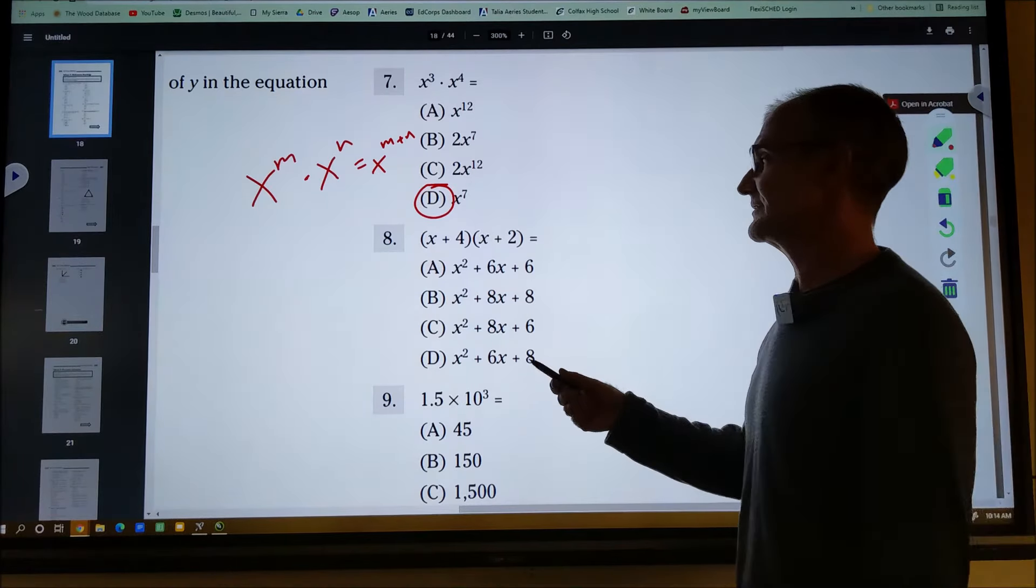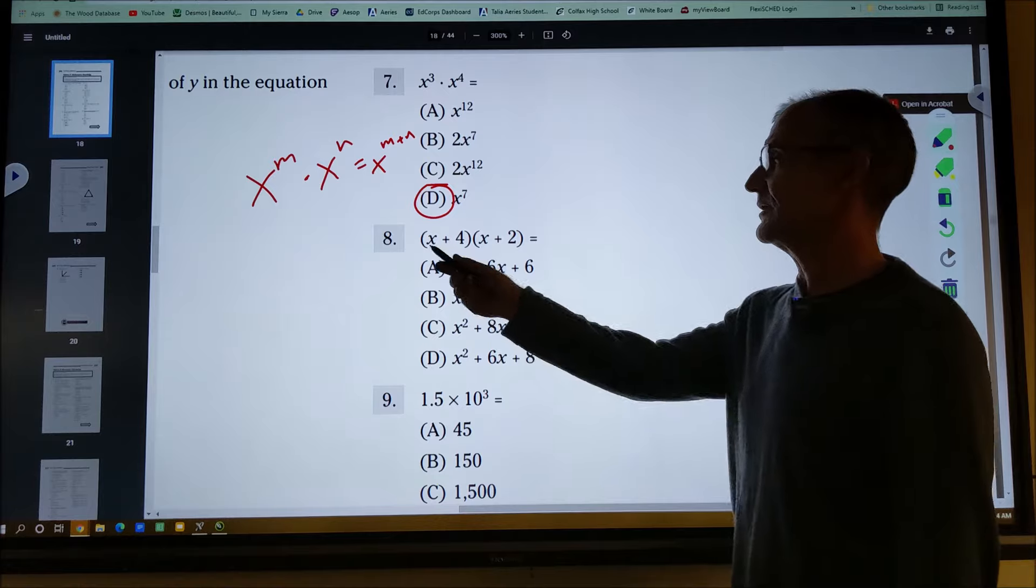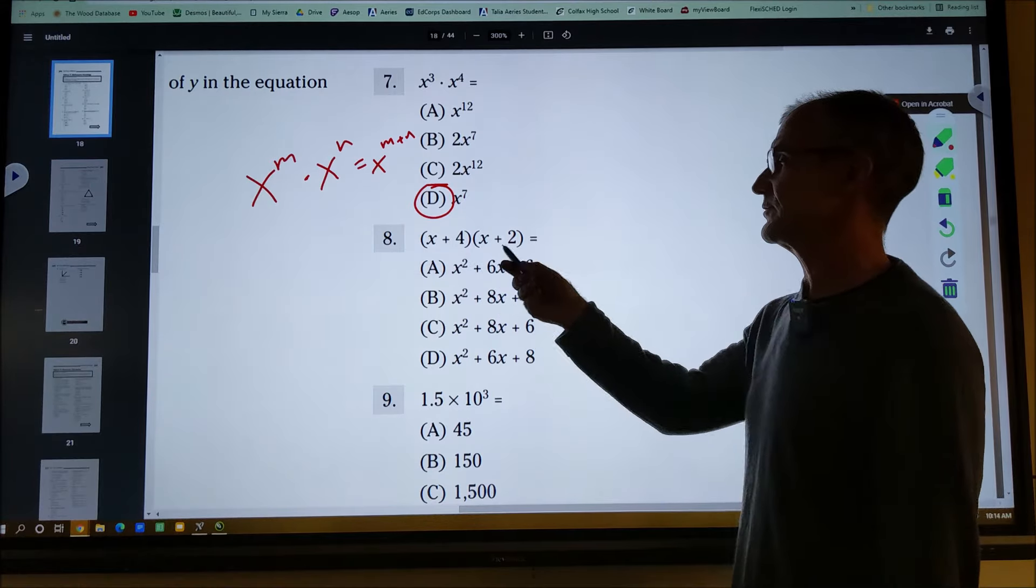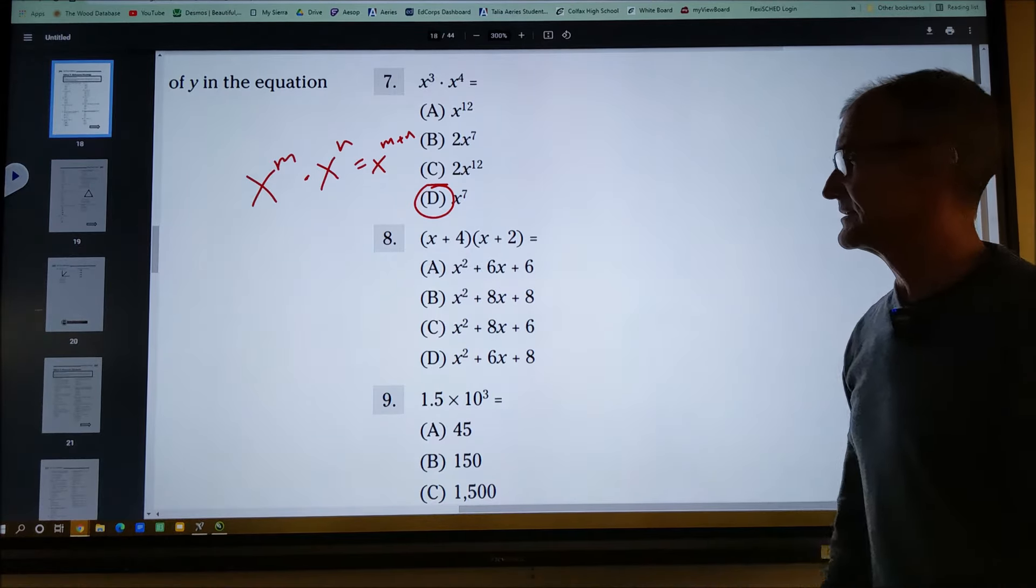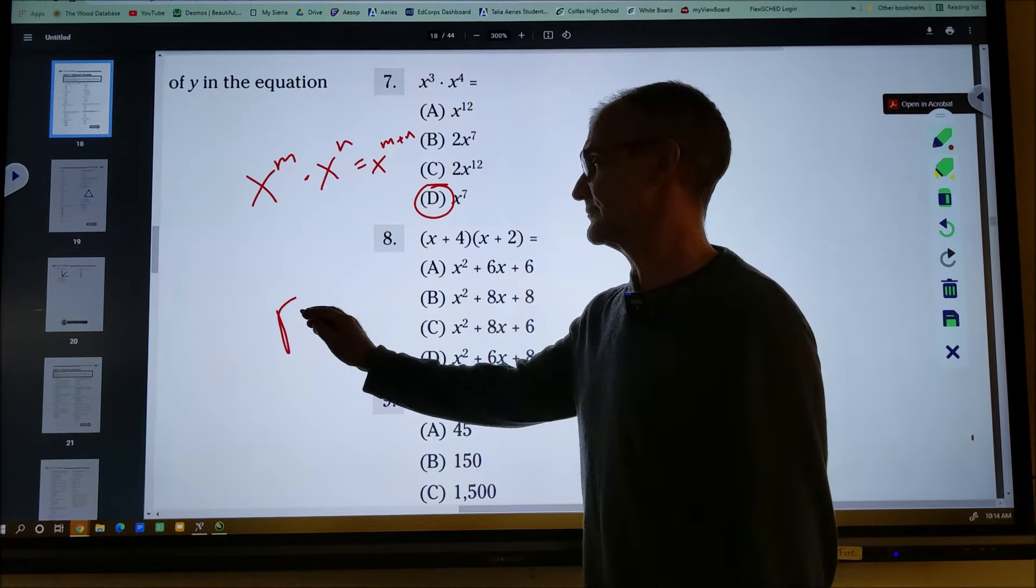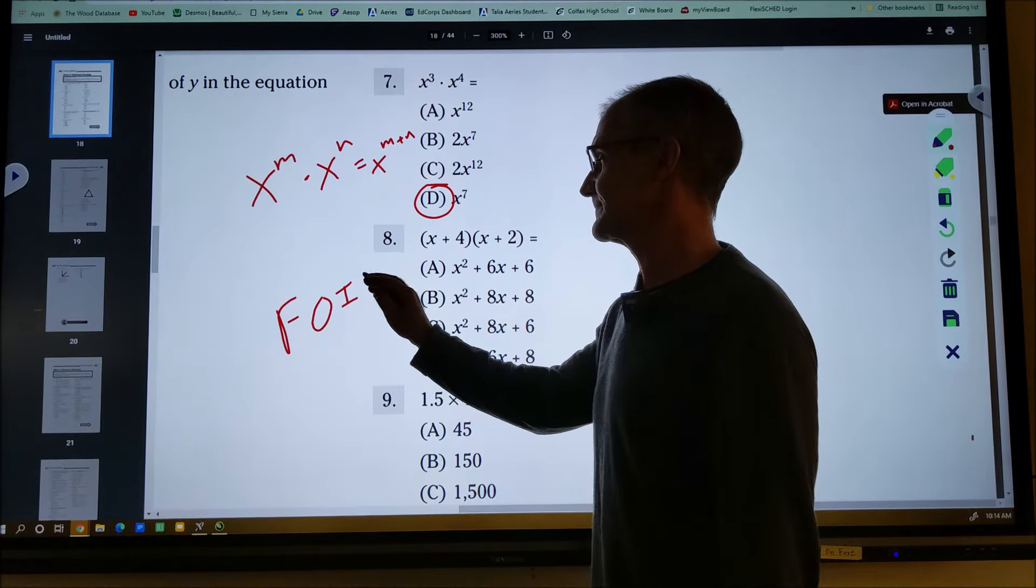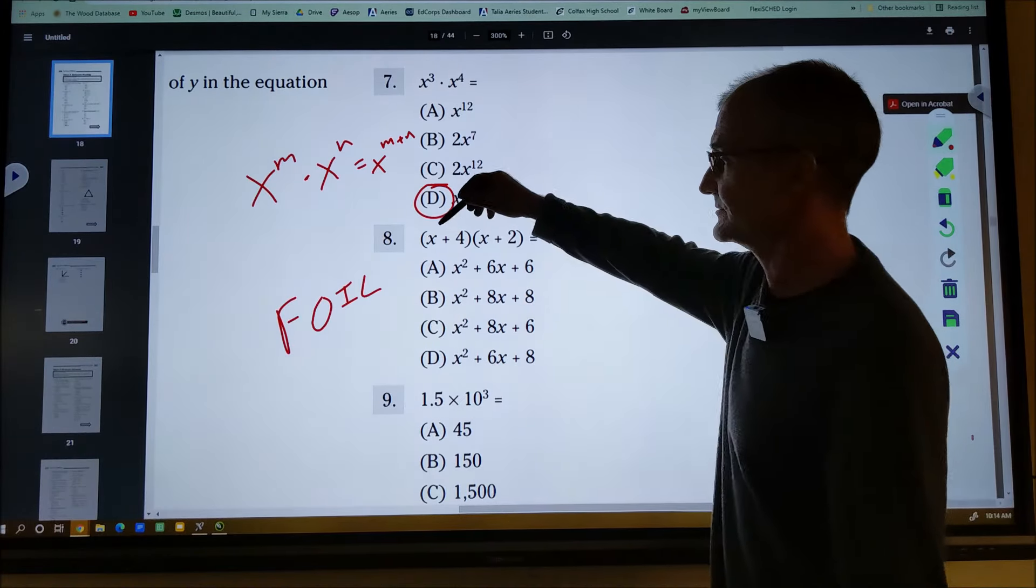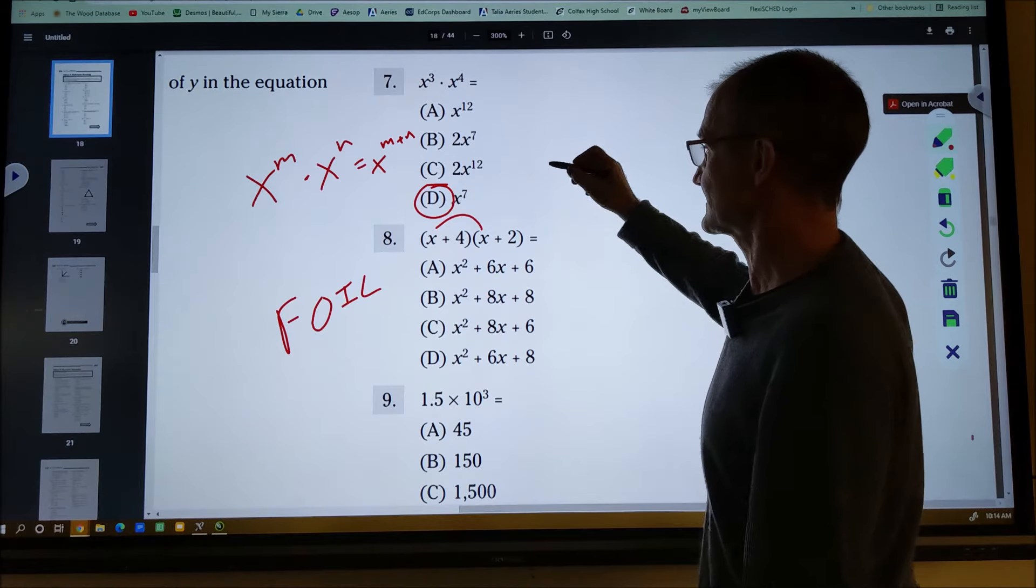Number eight, this is about expanding quadratic. So I have a quantity x plus four times a quantity x plus two. Some people use the acronym FOIL to remember that. And what that means is you multiply the first terms together. x times x is x squared.